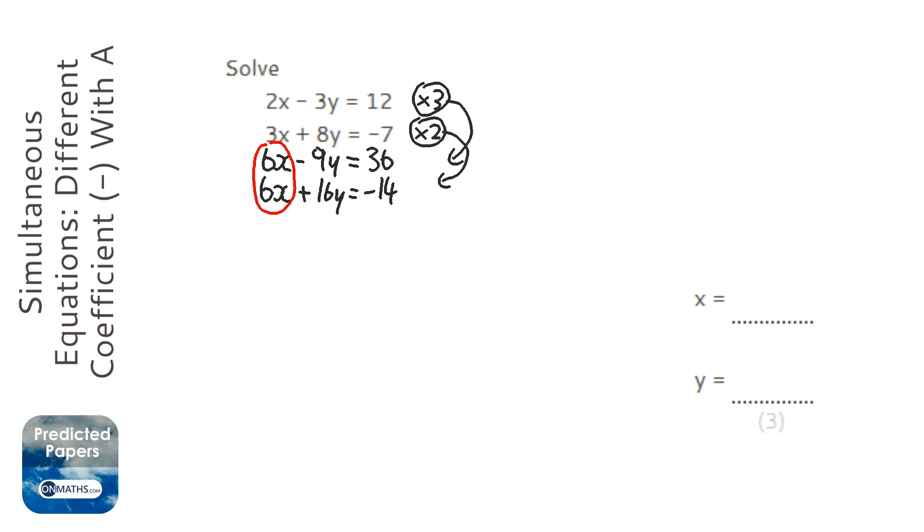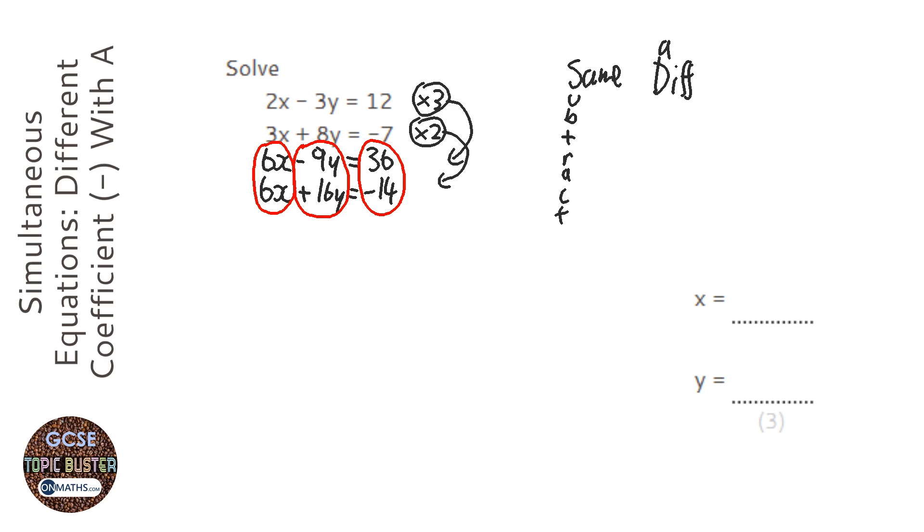So with simultaneous equations, we work downwards, and the rule of what we're doing is if we have the same signs, we subtract, and if we have different signs, we add.